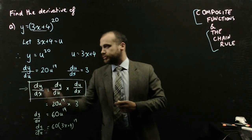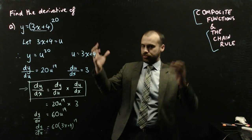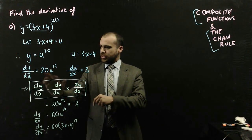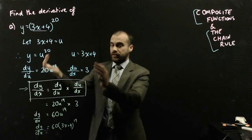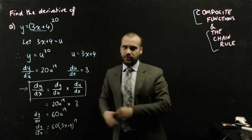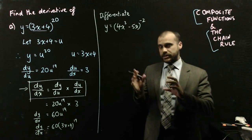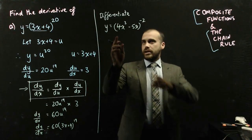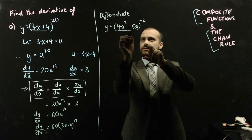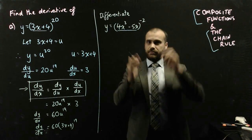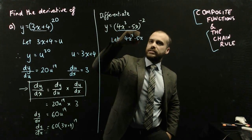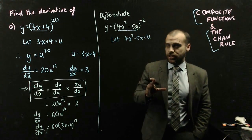That is the chain rule. It draws upon our knowledge of composite functions so we can spot that a function is inside another function. We find the derivative of the function inside, find the derivative of the function outside, multiply them together, and then sub back in the original expression. Now here's the next example, a little bit more complicated but same idea: y equals (4x cubed minus 5x) to the power of negative 2 — a function raised to a power. I can say let 4x cubed minus 5x equal u.